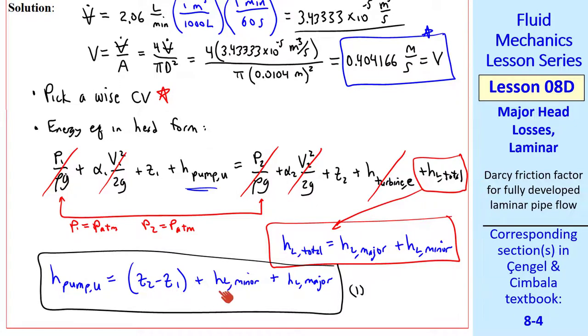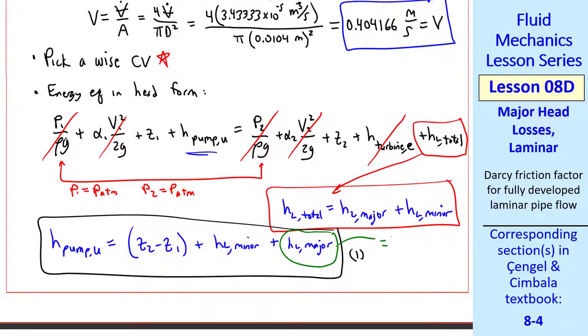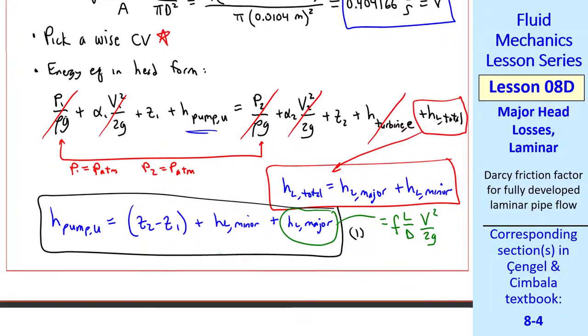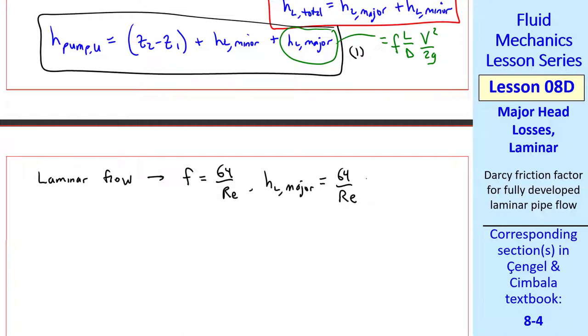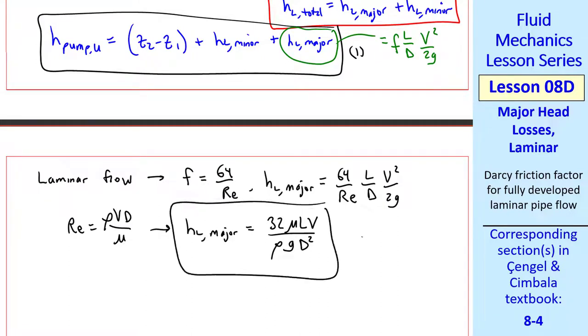We know this elevation difference and we were given HL minor. Later on in the course we'll be able to calculate this ourselves. And now we use our workhorse equation for HL major. That is, HL major is F L over D, V squared over 2G. In this lesson we're talking about laminar flow, so F is 64 over Reynolds number. So HL major is thus 64 over Reynolds number, L over D, V squared over 2G. While Reynolds number is rho V D over mu, HL major turns out to be 32 mu LV over rho G D squared. And I'll call that equation 2.